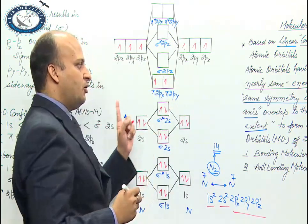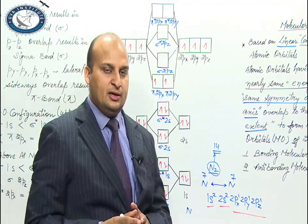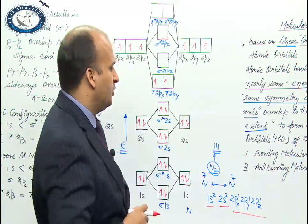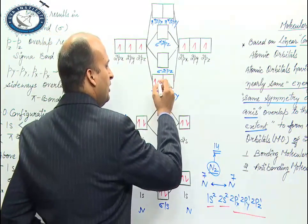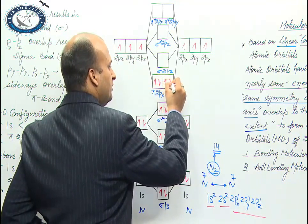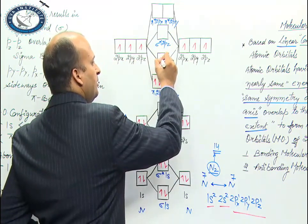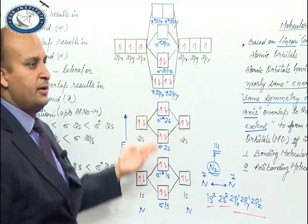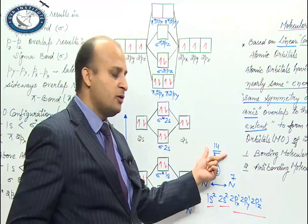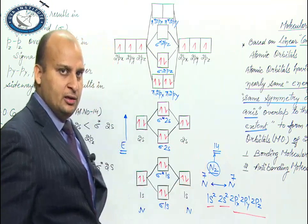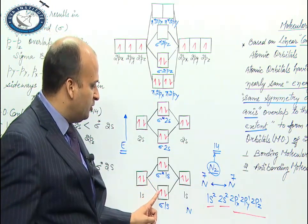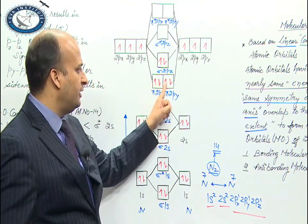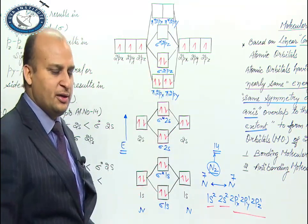When we have degenerate orbitals, we use Hund's rule — first they fill partially, then pairing occurs. This is the molecular orbital diagram. Total electrons: 14. See the molecular orbitals: 1, 2, 3, 4, 5, 6, 7, 8, 9, 10, 11, 12, 13, 14 — all 14 electrons are filled.